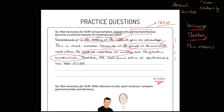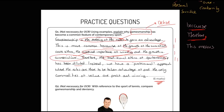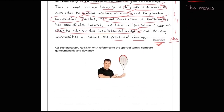'Instead, we have a professional approach where the rules are to be taken advantage of, and the only commodities of value are profit and winning.' Go back to the question - did I explain why gamesmanship has become a common feature today? Yes - I stated the factors and explained why sportsmanship has been lost. I perhaps could have also got a mark for defining sportsmanship. Now the next question: 'With reference to the sport of tennis, compare gamesmanship and deviancy.'